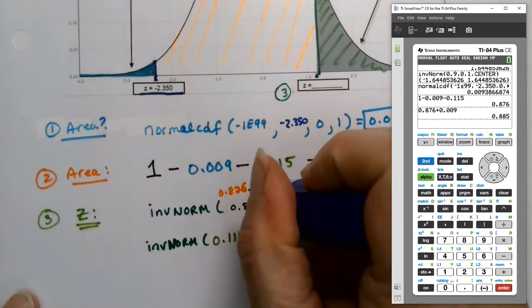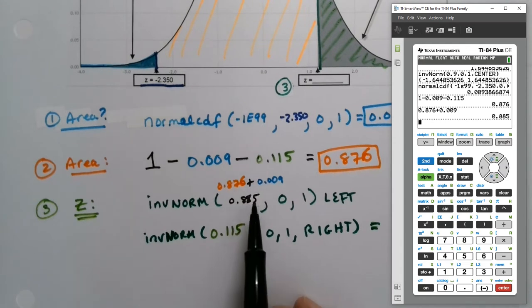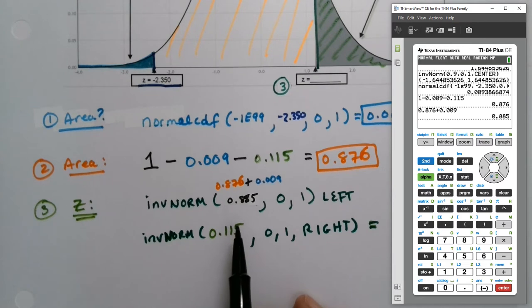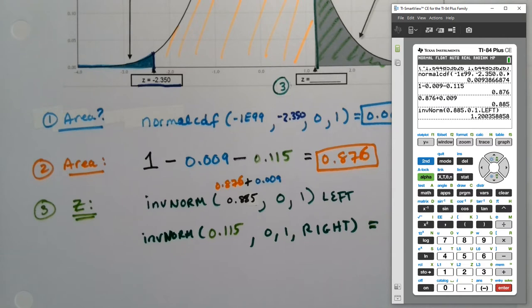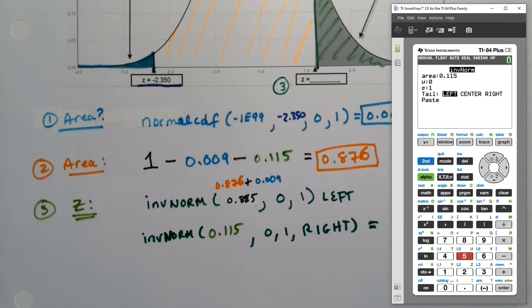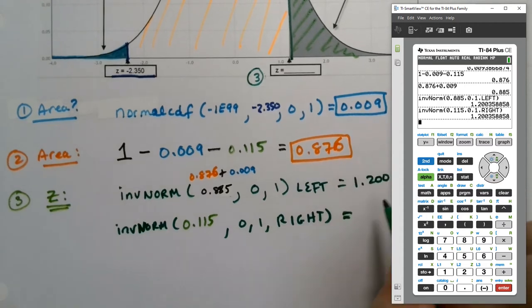So second distribution, let's try this again. Inverse norm: 0.885, zero and one and left, paste. And then if I did 115, second distribution, inverse norm, if you have a fancy calculator you can say 115, then go down here and go to the right and press enter to make it the right portion and press paste. See, they both work out to be 1.200, so whichever way you need to find it.